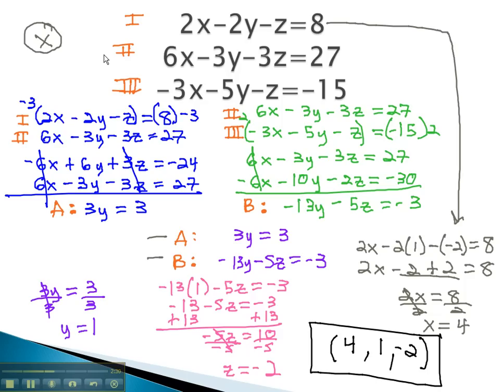This is the combination of numbers that will make all three of these equations true at the same time.